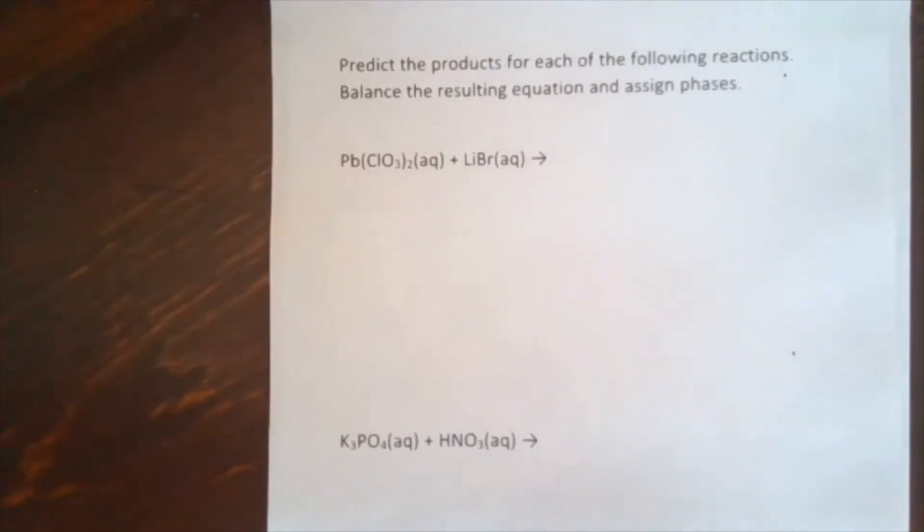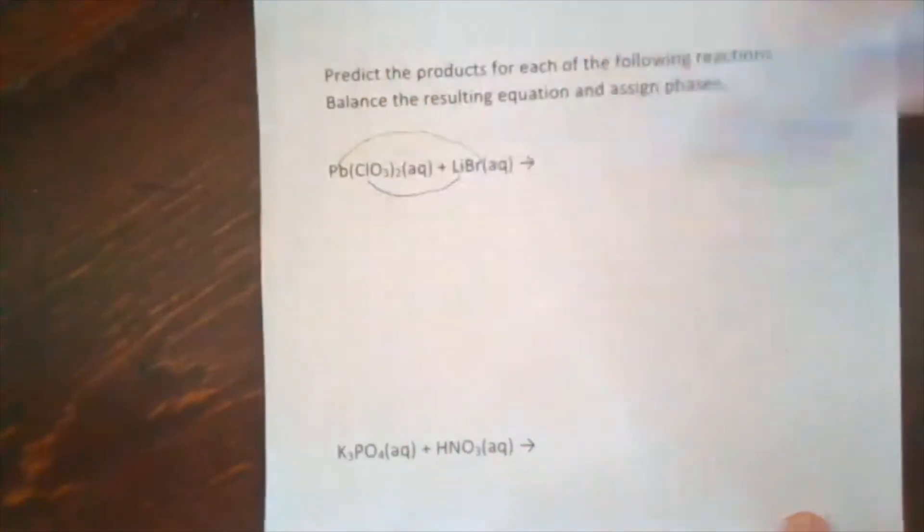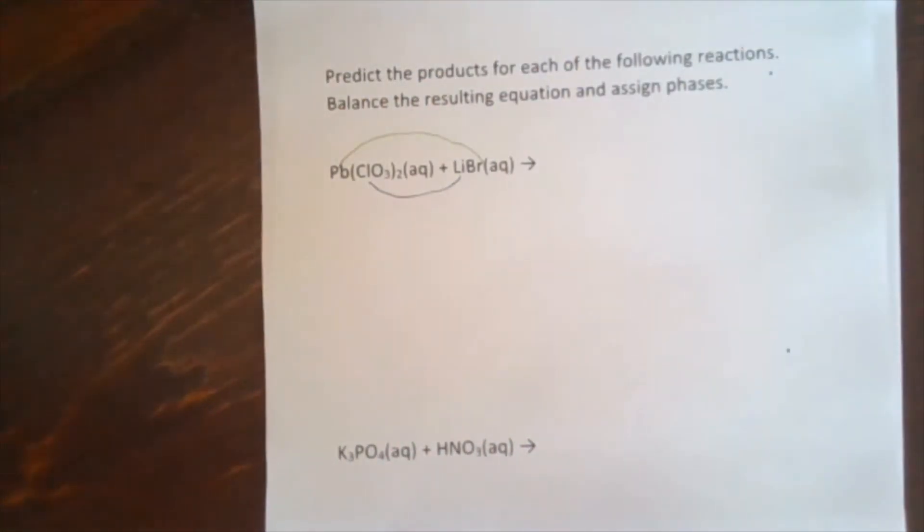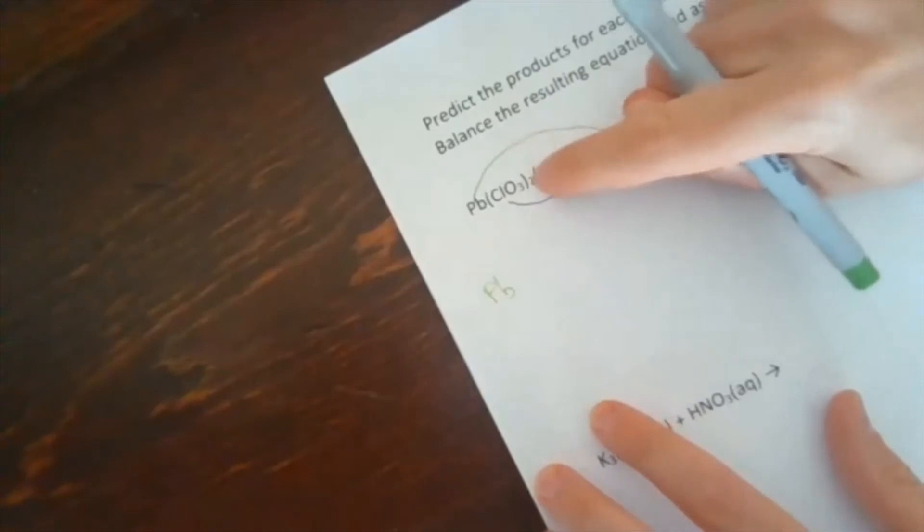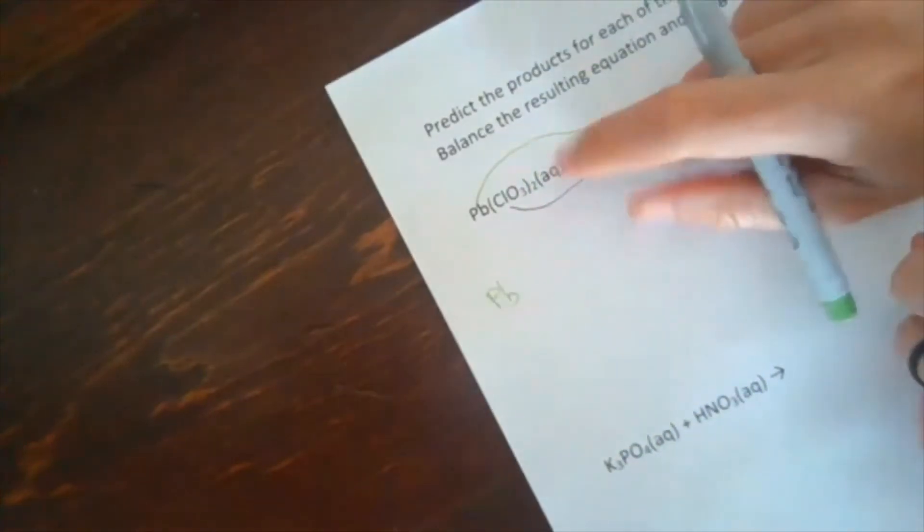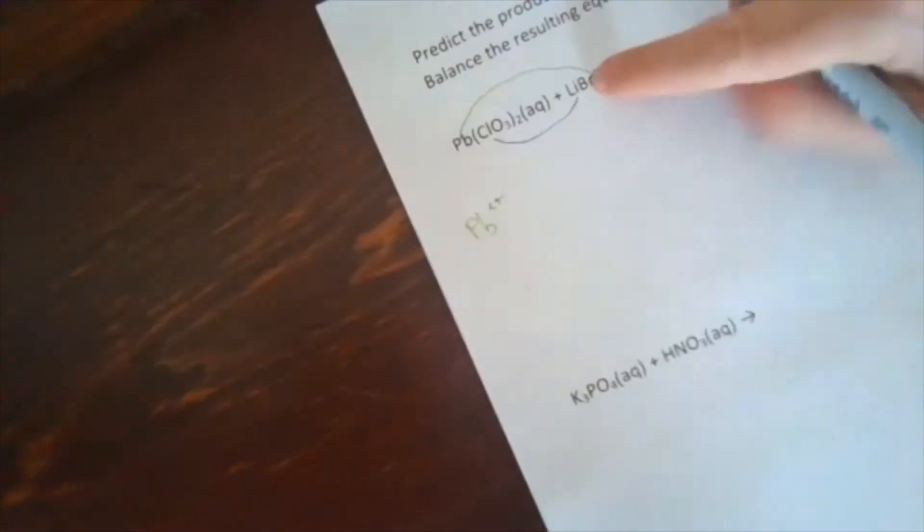So let's predict some products. Pb(ClO3)2 plus LiBr. These are both ionic compounds. Pb lead is a metal, Li lithium also a metal. Whenever we are faced with two ionic compounds, we're going to do our double displacement. So if we want to predict those products, we know that I have the Pb, chlorate ClO3-, polyatomic. If we look it up, it has a charge of negative one. I have two of them, so that's negative two. The lead is lead(II). Bromide is a halogen, group 7A. That's a minus one. Lithium is Li+.